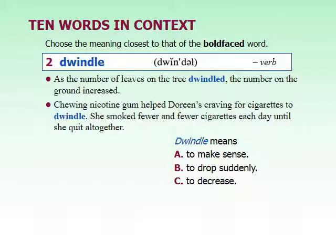Our next word is dwindle, and this is a verb. As the number of leaves on the tree dwindled, the number on the ground increased. Chewing nicotine gum helped Doreen's cravings for cigarettes to dwindle — she smoked fewer and fewer cigarettes each day until she quit altogether.